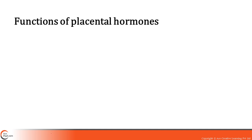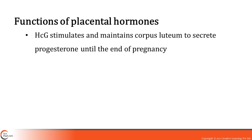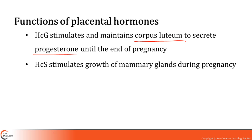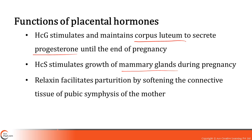Let's look at the function of some of these hormones. HCG stimulates and maintains — it prolongs the life of the corpus luteum so that there is a continuous supply of progesterone till the end of pregnancy. HCS, human placental lactogen, acts on the mammary gland stimulating the process of lactation. Relaxin, also secreted in the ovary, helps in softening the connective tissue of the pelvic region and the pubic symphysis of the mother so that the fetus can undergo parturition.